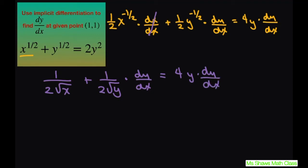Now when they give you a point it's easier if we just plug that point in before we rearrange. It's less algebra, especially if you have some simpler problems. So square root of 1 is just 1. So this will be 1 divided by 2 plus 1 divided by 2 times derivative of y with respect to x equals 4 times derivative of y with respect to x.